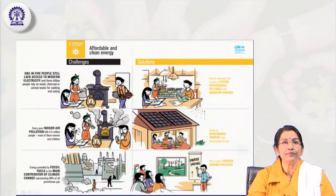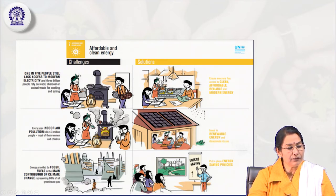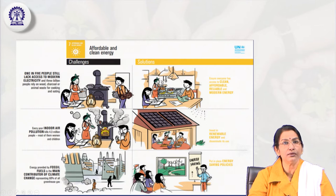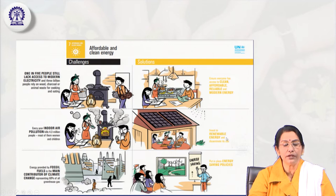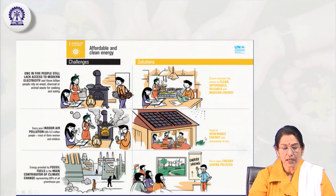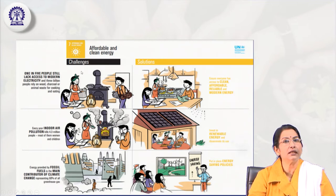At present, the affordable energy challenges we are facing include lack of access to modern electricity, indoor air pollution from cooking with firewood inside households, and fossil fuels being major contributors to climate change. The possible solutions are affordable renewable and modern energy, renewable energy policies, energy saving policies, and access to clean, affordable, and renewable energy.